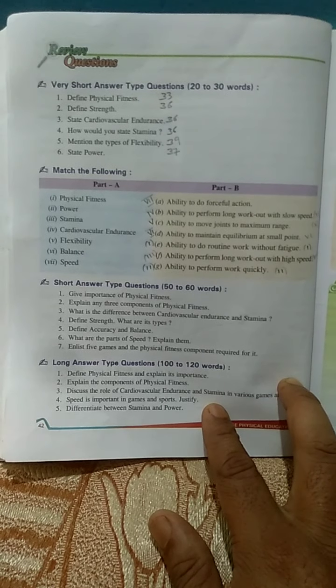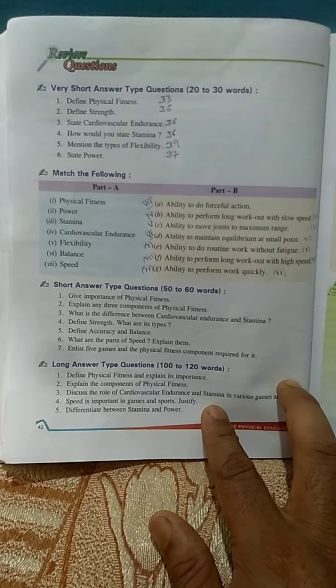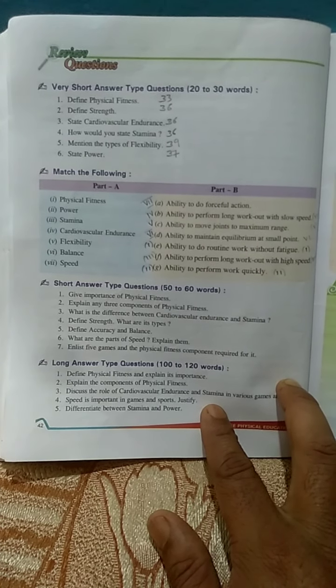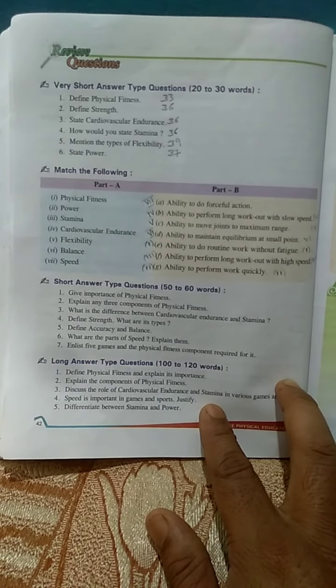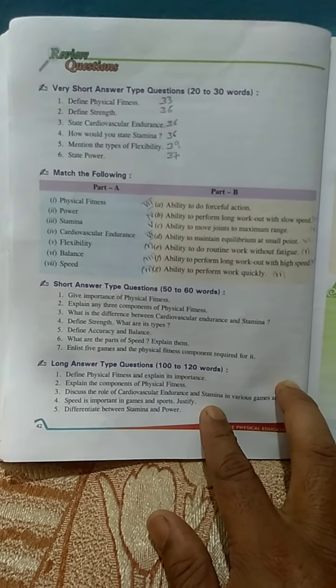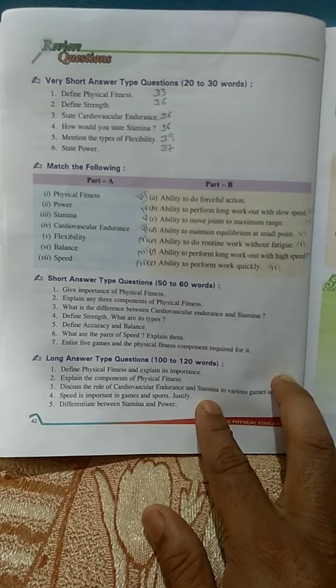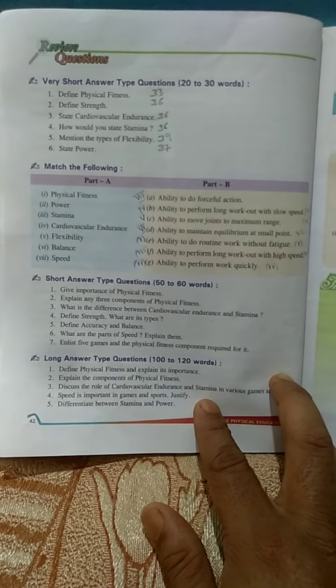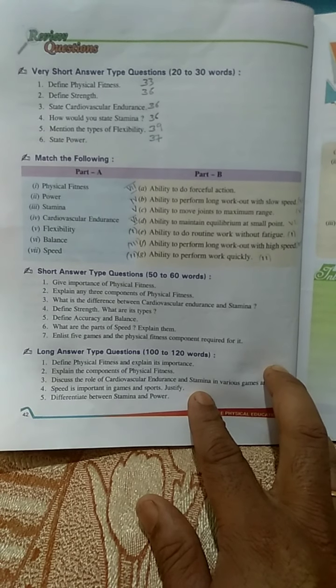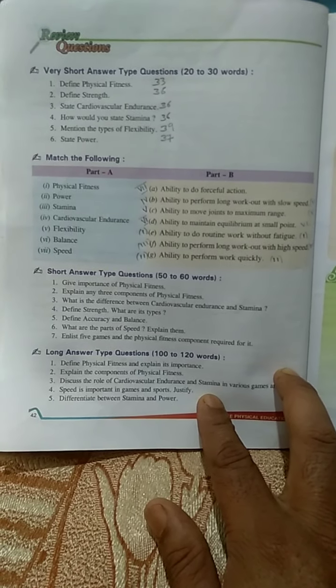Ability to perform long workout with slow speed. Flexibility - C part, ability to move joints to maximum range. Balance - it is D part, ability to maintain equilibrium at small point. Speed - part A, ability to do forceful actions.